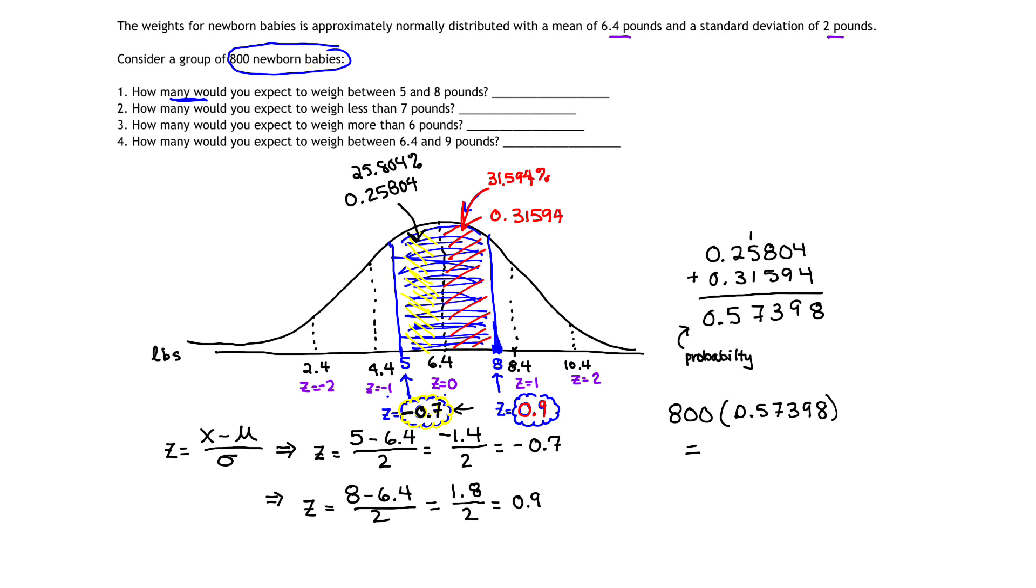And when I multiply 800 times 0.57398, I get that the total number of babies then is roughly, and I'll put an approximate, 459.184. I'll round up because you can't have a fraction of a baby. And so we'll say that's 460 babies that fall within those weights of 5 pounds and 8 pounds.